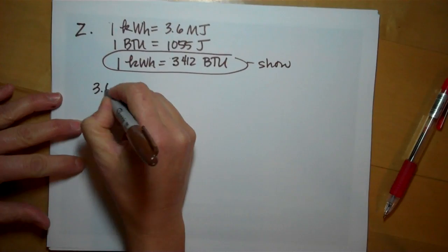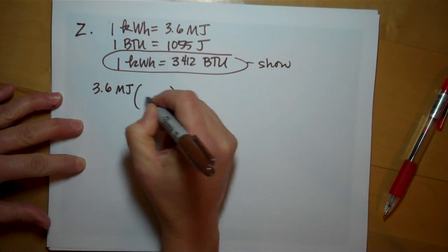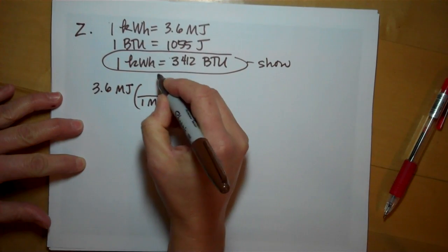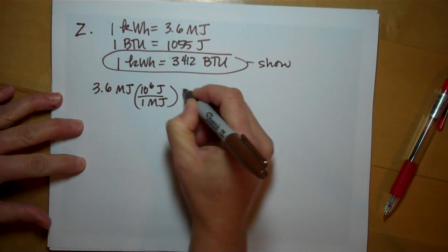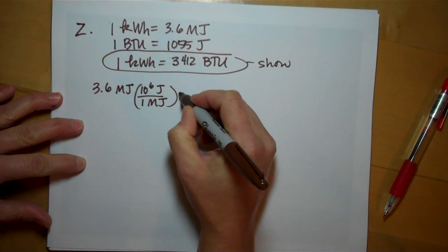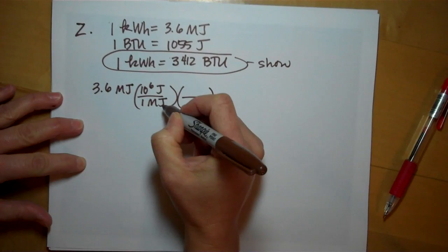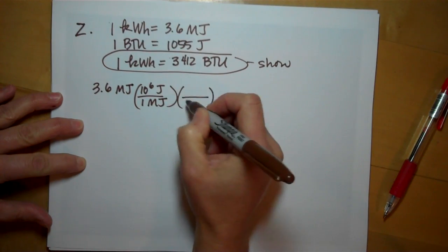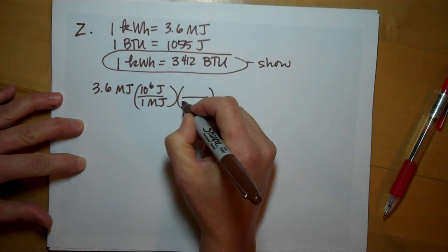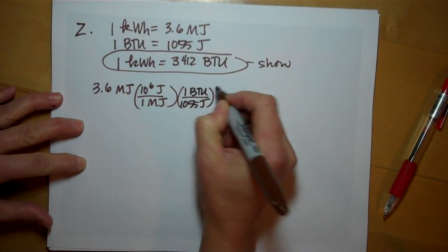So we're given 3.6 megajoules of energy. We know 1 megajoule is the same as 10 to the 6th joules. That's just what mega means. And we know joules, using this conversion factor, there's 1055 joules in one BTU.